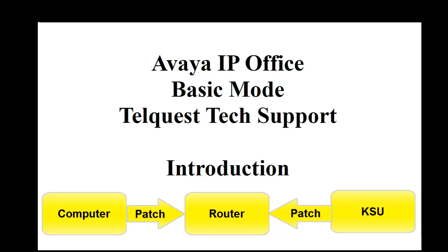If you use the direct cable connection method — going from your computer to the KSU directly without the benefit of a router — and you're unable to connect, if you call us, all we can do is tell you to get a router. So use the router method and you'll be much happier and much more successful at connecting to the KSU.